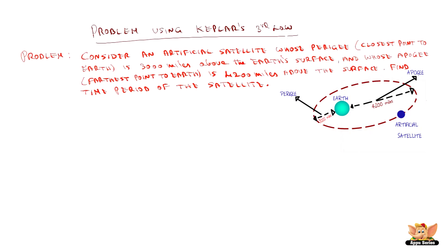This is the center of the earth. Now, we know the data. From the surface of the earth to the perigee, the distance is given as 3000 miles. Whereas, from surface of the earth to the farthest point, that is apogee, it is given as 4200 miles.